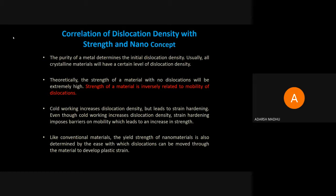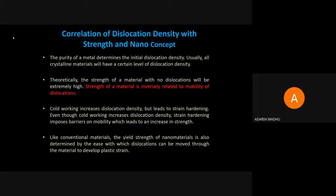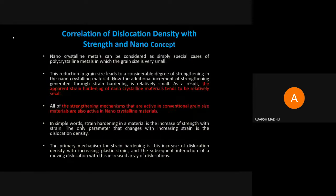So here comes the theory behind nanomaterial. The correlation between dislocation density and strength is inversely proportional — mobility of dislocation increases or dislocation density increases, the strength of the material decreases. Nanocrystalline materials can be considered as materials or metals where the grain size is very very small.